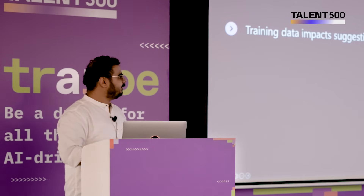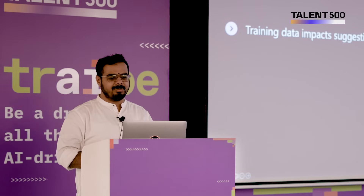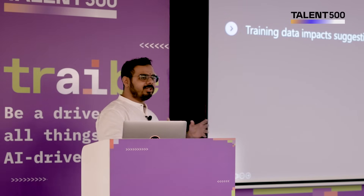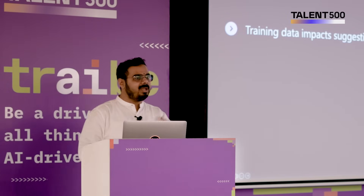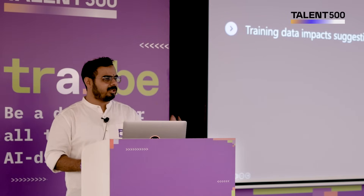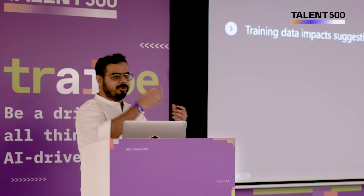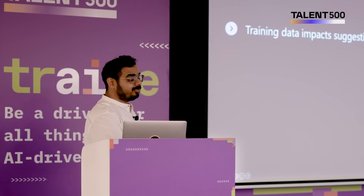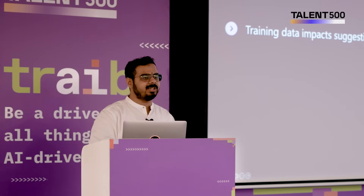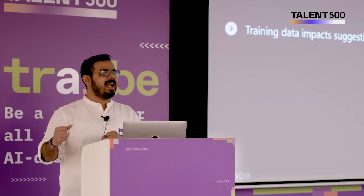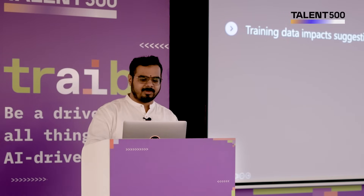GitHub Copilot has been trained on billions of lines of publicly available code from the internet. Therefore, there's a lot more training data for some of the popular languages — JavaScript, Python, .NET, and so on. If you use something like COBOL or other lesser-known languages, it might still give you some suggestions, but it might not be entirely accurate because there just isn't enough training data.